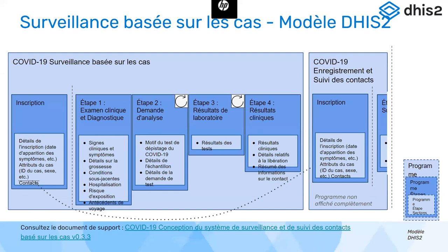Ce sont des informations que nous avons déjà sur les outils standardisés de l'OMS, harmonisés aussi par les pays et qui ont été mis en place. Nous partons sur la base de ces supports standardisés qui nous ramènent vers la demande d'analyse. Nous allons renseigner les motifs du test de dépistage, ainsi que les demandes de tests et toutes les informations très utiles. Ensuite, il y aura le résultat du test qui sera donné par le laboratoire.